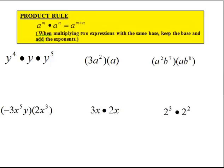We'll look at some simple examples here. We have y to the fourth times y times y to the fifth. Remember that when y is written by itself, the exponent there is 1. So all we need to do is add all of the exponents. We have 4 plus 1 plus 5, which happens to be 10. So our answer for this first example is y to the tenth power.